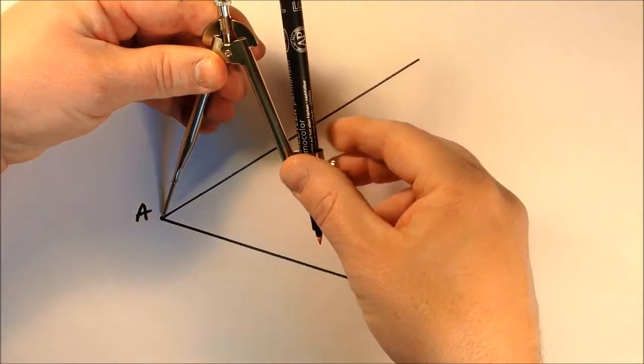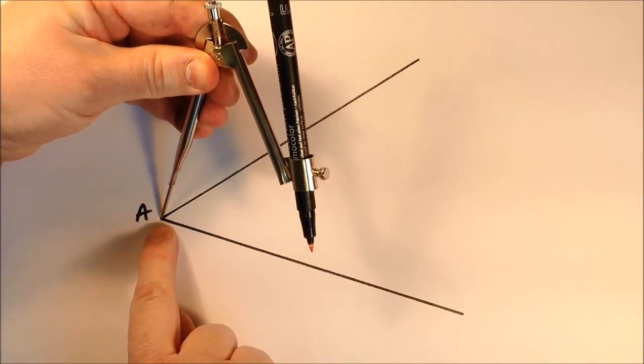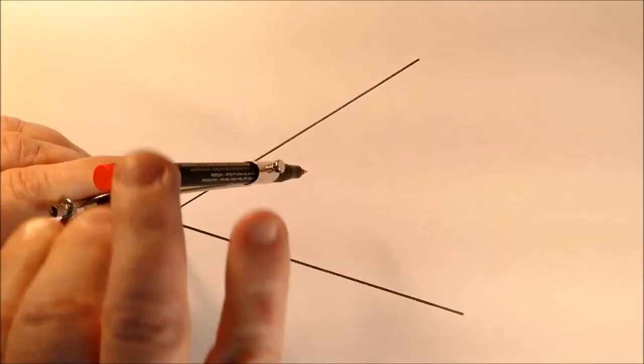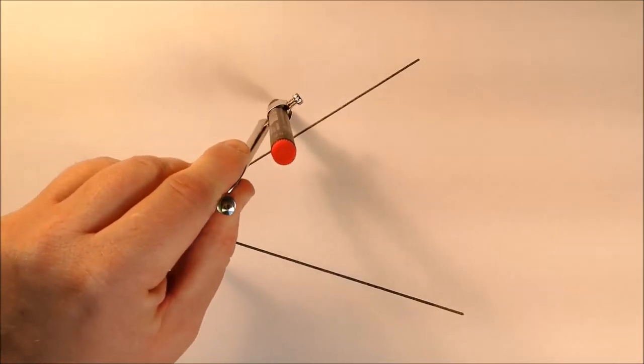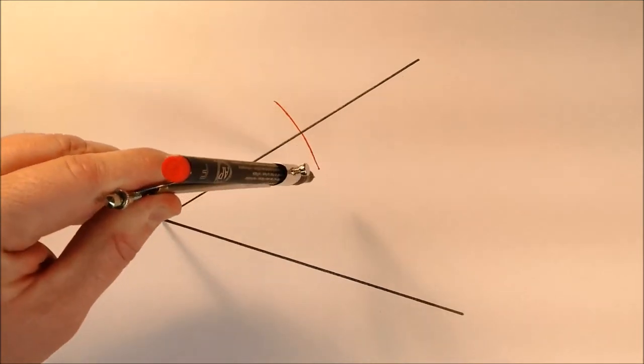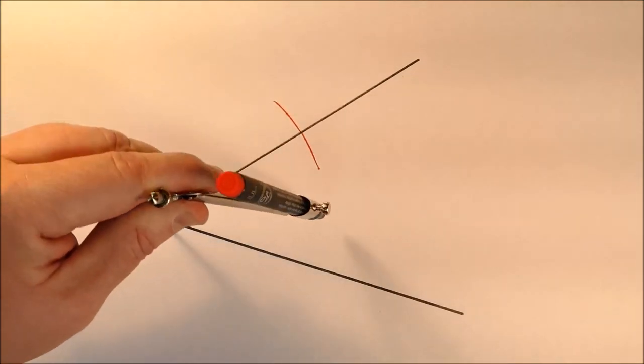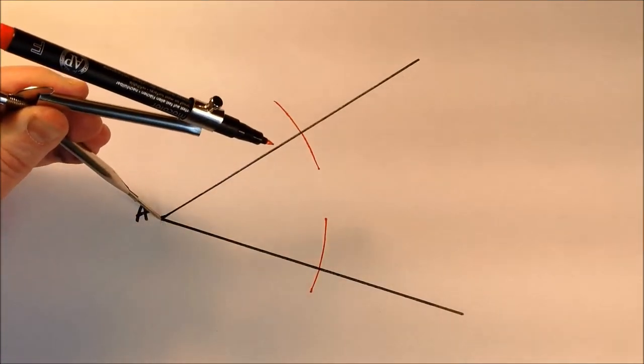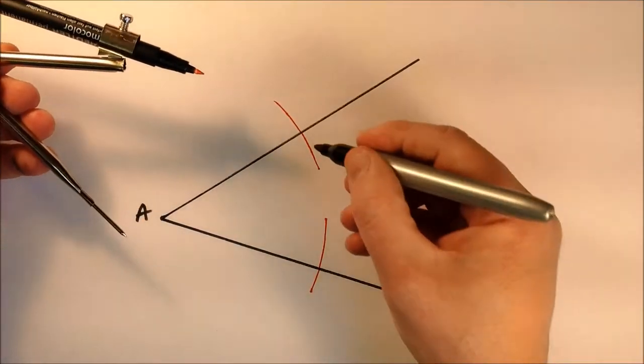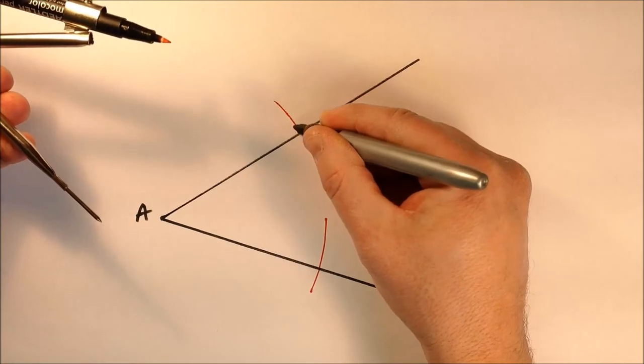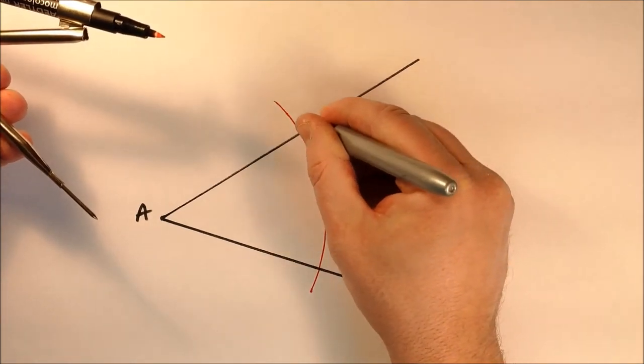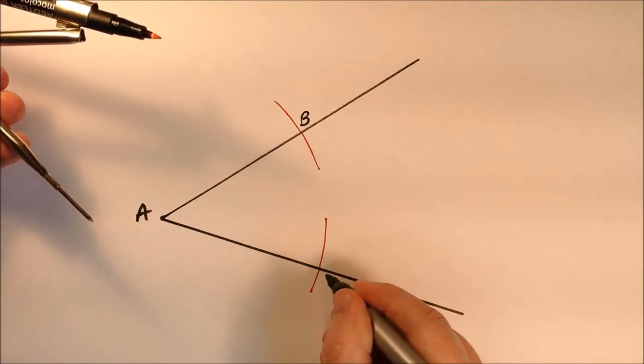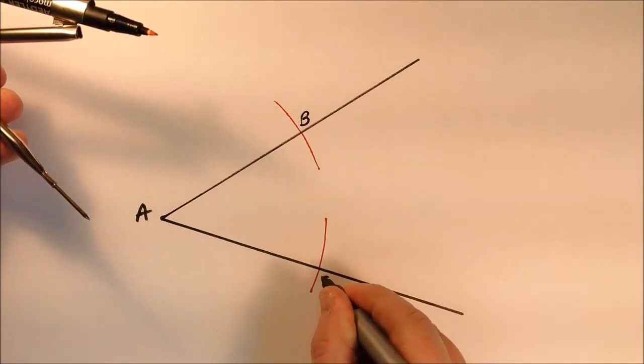I'm going to put the point in down here at point A, and then I'm going to make an arc that cuts that segment. I'm going to label this point where this arc cuts that segment B, and I'm going to label this point where that arc cuts this segment C.